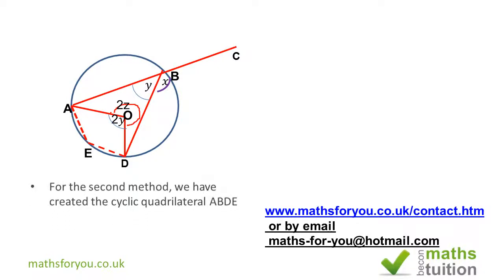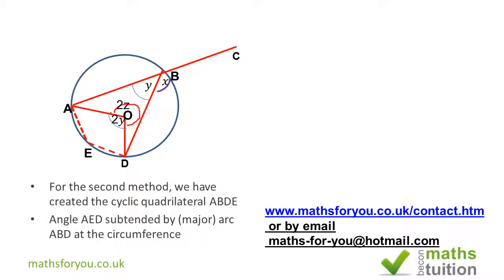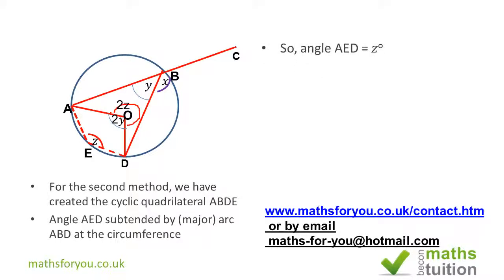Because we've now created this cyclic quadrilateral, this angle is subtended at the center by the major arc ABD, as seen in the last slide — so this angle is 2Z. If that's 2Z, then this major arc subtends the angle AED at the circumference. So angle AED will now be Z degrees.